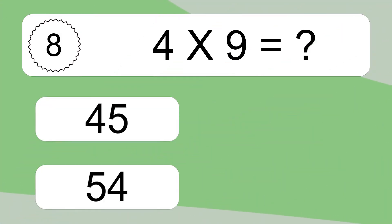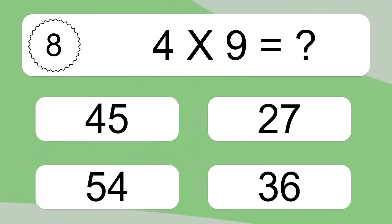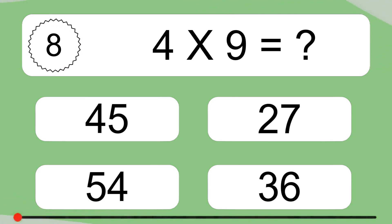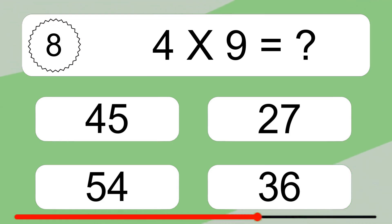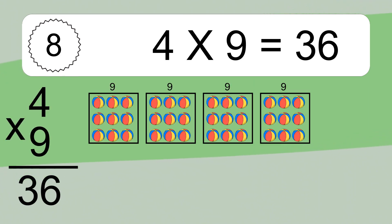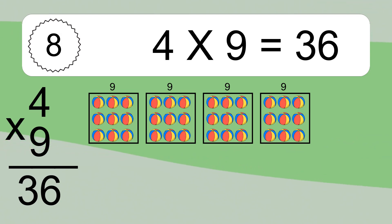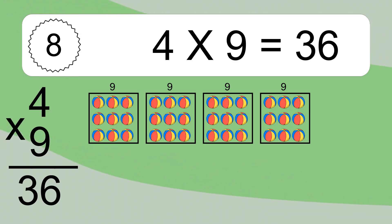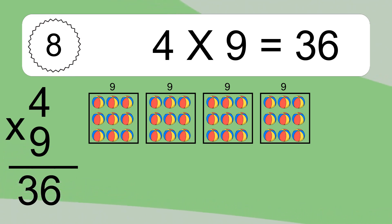4 times 9 equals what? We have 4 boxes, and each box has 9 colorful balls inside. If you count all the balls in all the boxes together, you will have 4 times 9 balls. This equals 36 balls.